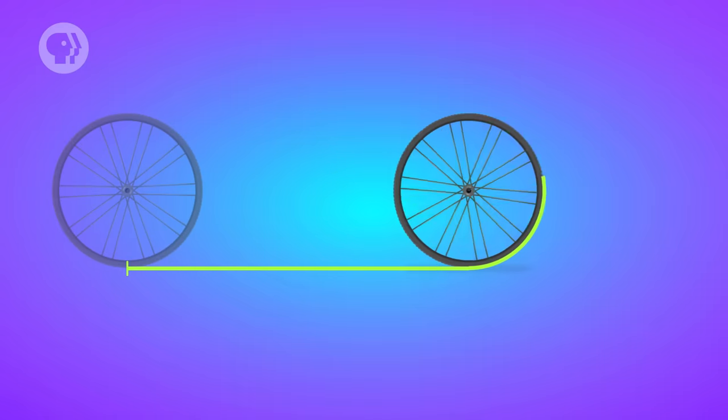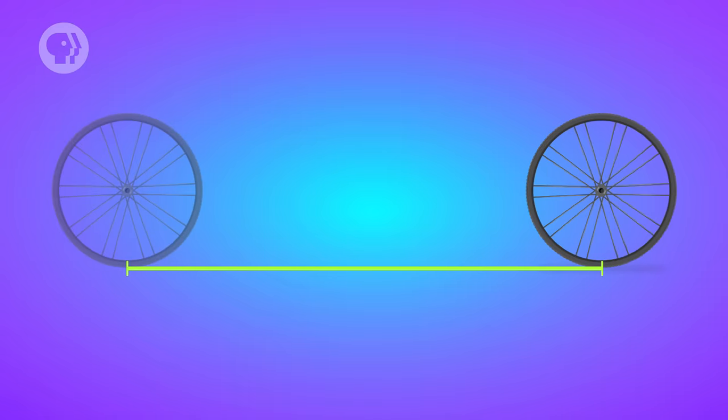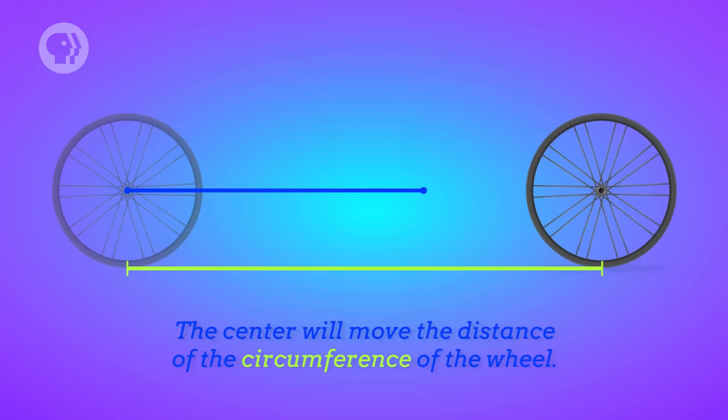If you roll the wheel along the floor for one full rotation, that means the entire circumference of the wheel would touch the floor, one point at a time. And the center of the wheel will move forward by a distance that's equal to the circumference of the wheel, aka its radius, times 2 pi.